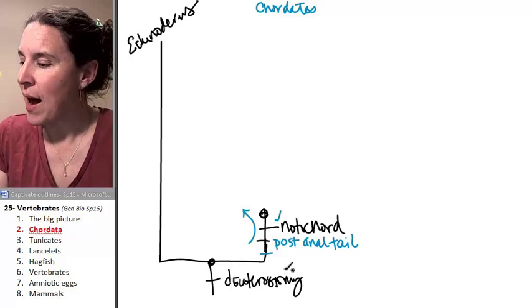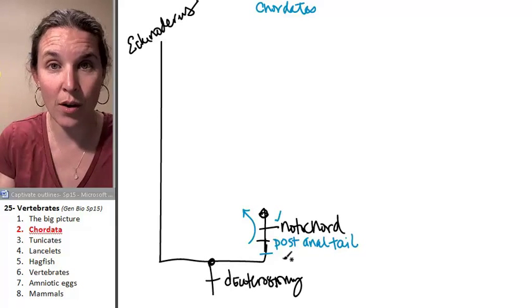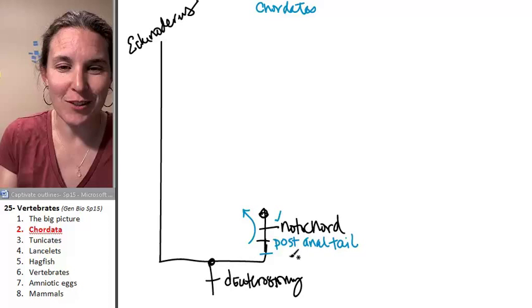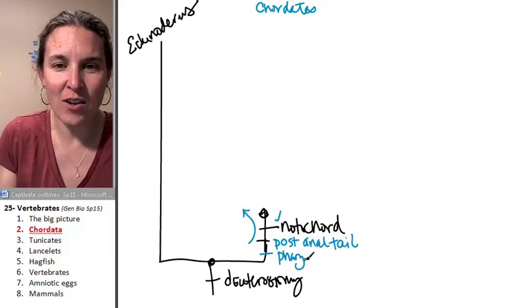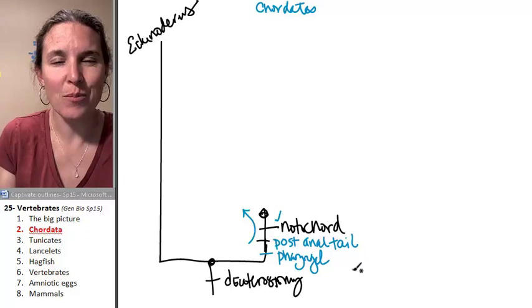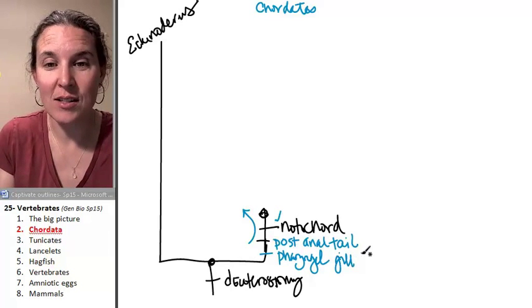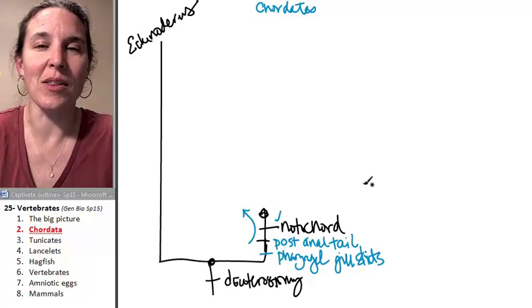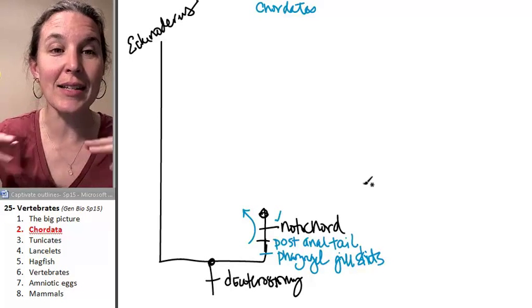They also have, let's see, what are some other characteristics? A dorsal hollow nerve cord. And pharyngeal gill slits. And of course, don't you think that you have gill slits? Dude, I don't even want to talk about what that looks like. Because it says slit dog pound. And gill slits...